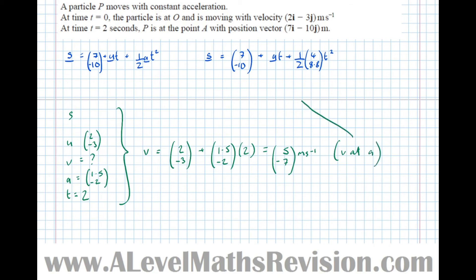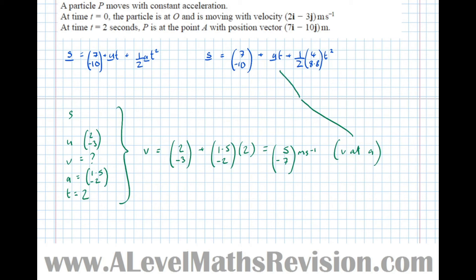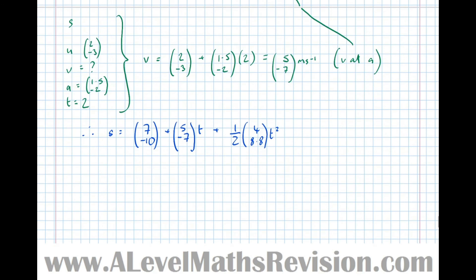That velocity at A corresponds to the U that we don't yet know. So now we can write an equation of motion. Therefore, S equals the initial position 7 minus 10, plus UT, so 5 minus 7 T, plus half times the acceleration 4i plus 8.8j T squared.